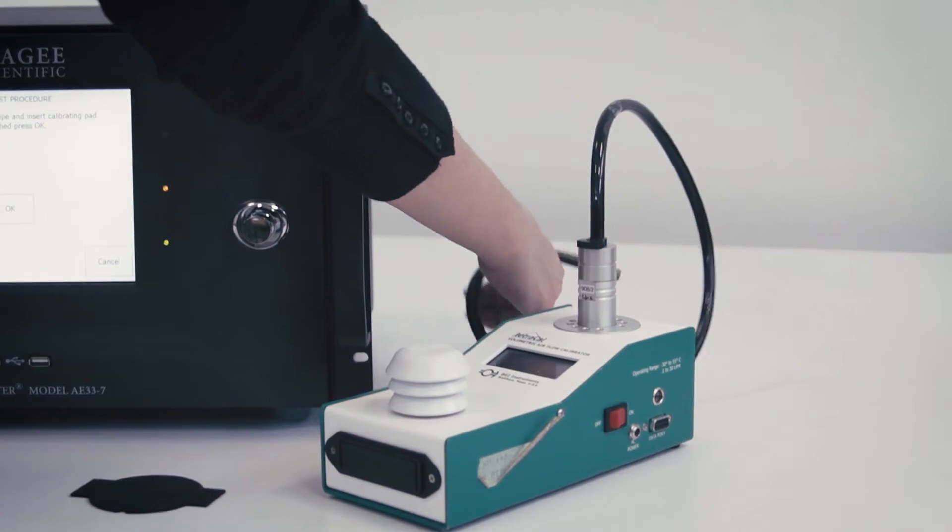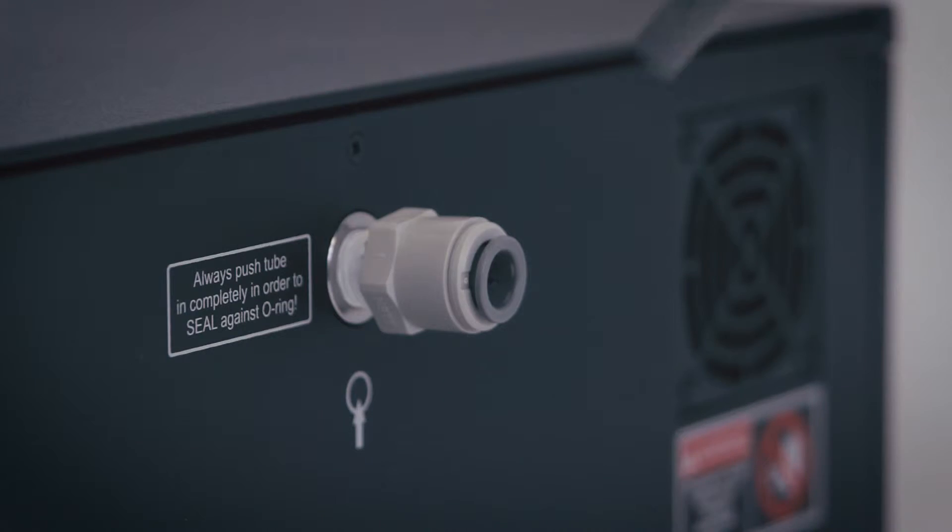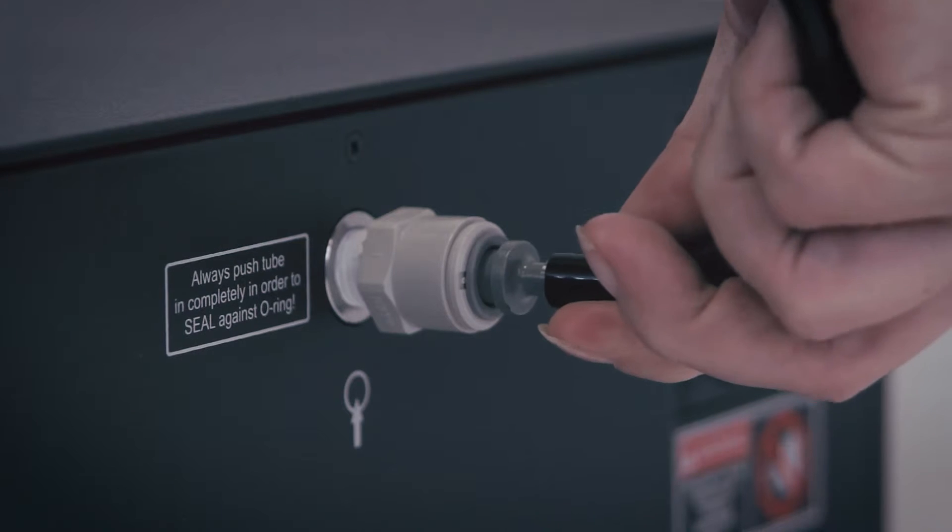Connect your external mass flow meter to the inlet port. Connect the flow meter using well-sealed tubing and fittings. Make sure that the hose connection is tight.